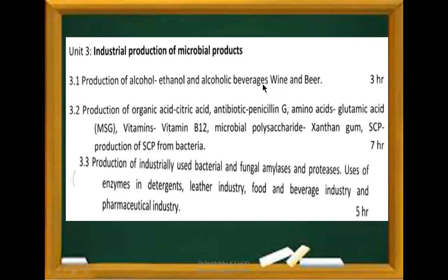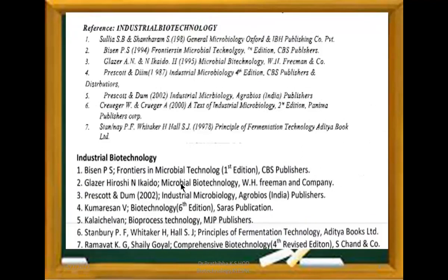Unit 3 is Industrial Production of Microbial Products. Unit 3.1 covers production of alcohol — ethanol and alcoholic beverages including wine and beer. Unit 3.2 covers production of organic acids such as citric acid, antibiotics like penicillin G, amino acids, vitamin B12, microbial polysaccharides like xanthan gum, and SAP production from bacteria. Unit 3.3 covers production of industrially used bacterial and fungal amylases and proteases.